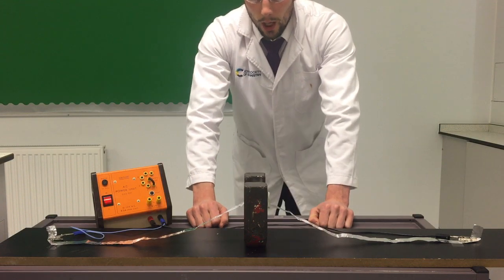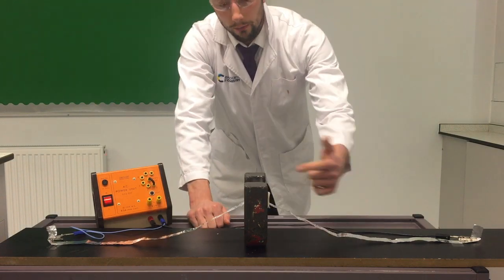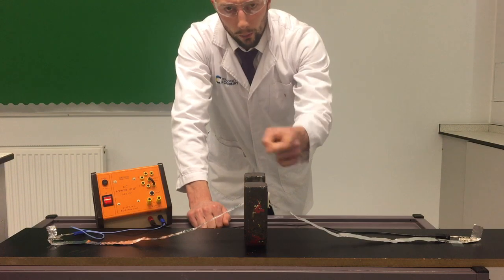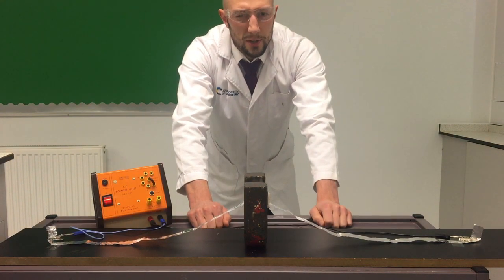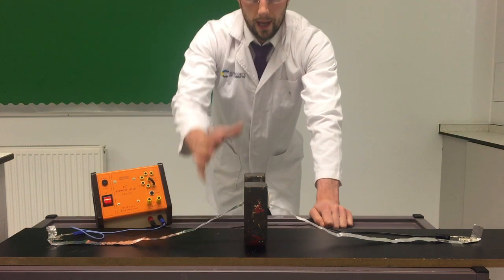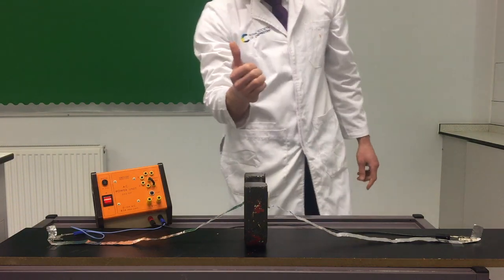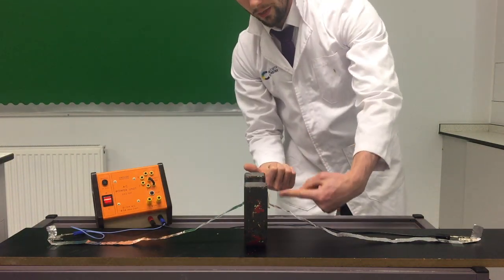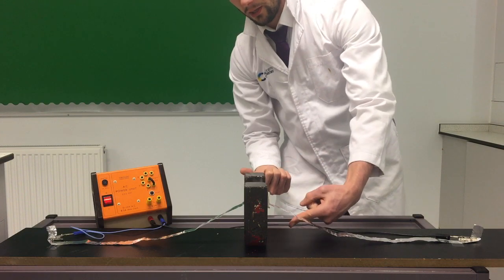The current is going to induce a magnetic field. So if I use my right hand induction rule, the magnetic field is coming this way around the aluminum foil.